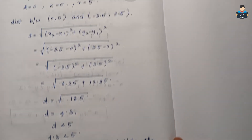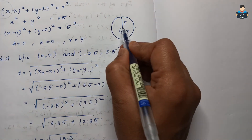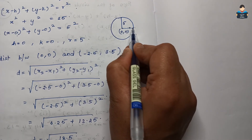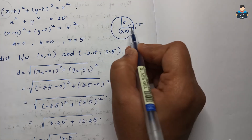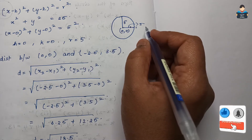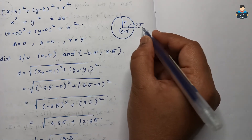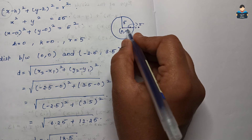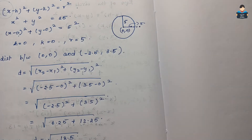Since 4.3 is less than 5, the point (-2.5, 3.5) lies inside the circle. If the distance were greater than 5 — for example, 5.5 or 6.5 — the point would lie outside the circle. Here, since the distance 4.3 is less than the radius 5, the point is inside the circle.